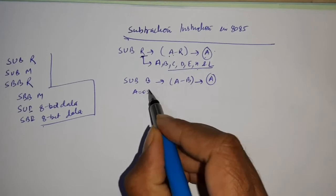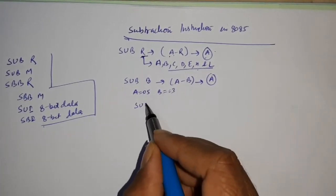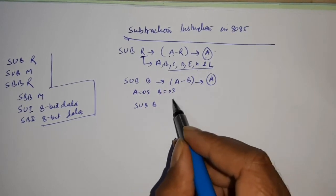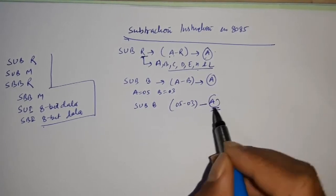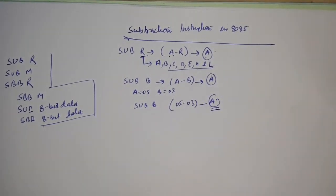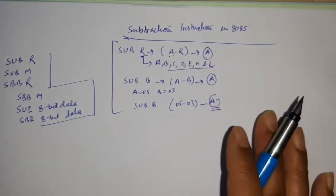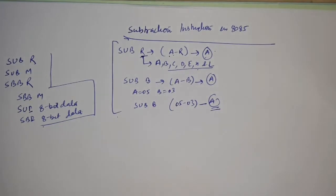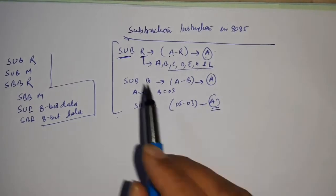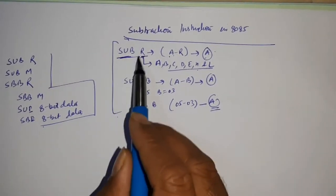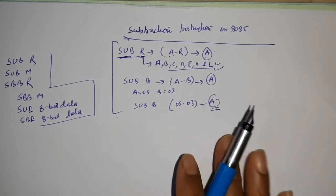Suppose the content of A is 05 and the content of B is 03. If I am writing SUB B, the meaning of this will be 05 minus 03 and the output will be stored in the accumulator. This is how this type of instruction works in the microprocessor. If you want to subtract any register from the accumulator, then you can use this type of instruction. R can be replaced by any of those registers.